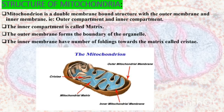Structure of Mitochondria: Mitochondria is a double membrane-bound structure with an outer membrane and an inner membrane, i.e. an outer compartment and inner compartment. The inner compartment is called the matrix. The outer membrane forms the boundary of the organelle. The inner membrane has a number of foldings towards the matrix called cristae. You can see this in the diagram below.